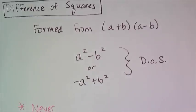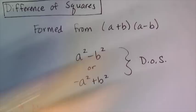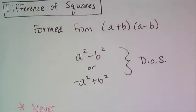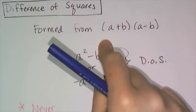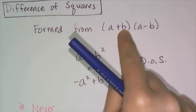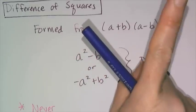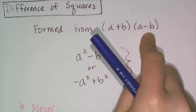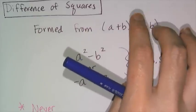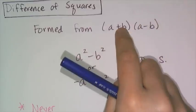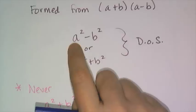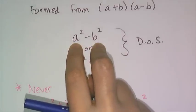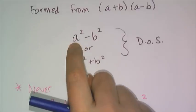Now on to the final special case — my favorite — because I can make my favorite type of algebra 1 factoring problem out of it. These are difference of squares. You've encountered them before: they're formed from taking a binomial and multiplying by a similar binomial with one sign change. The middle terms cancel — you get a positive ab and a negative ab — leaving a difference of squares: a squared minus b squared.